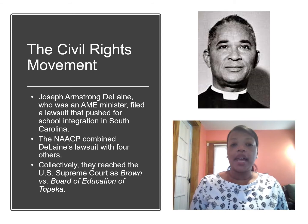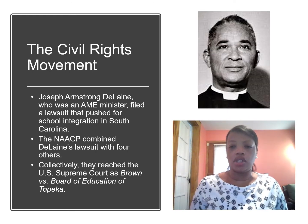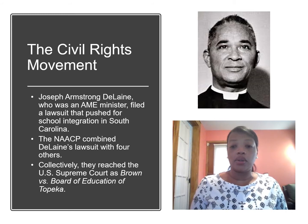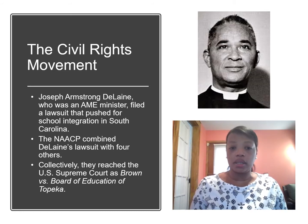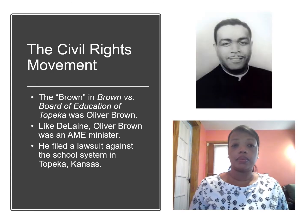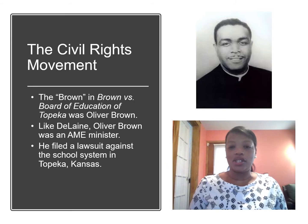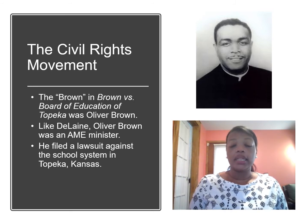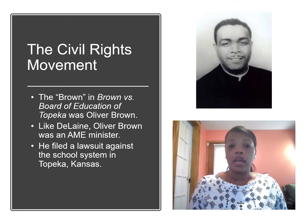During the Civil Rights Movement, Black parents advocated for school integration through the court system. They wanted their children to have access to the highest quality education possible, and they felt that integration was the key to making that happen. Joseph Armstrong Delane, for example, was an AME minister, and he filed a lawsuit in South Carolina advocating for his child. In 1951, the NAACP combined Delane's lawsuit with four others and created one class action lawsuit. This suit made it all the way to the Supreme Court as Brown v. Board of Education. The Brown in Brown v. Board of Education was Oliver Brown, another AME minister. Like Delane, he filed a lawsuit related to school segregation in Topeka, Kansas, where his daughter Linda was a student.